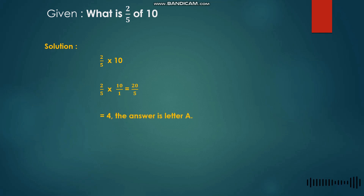Then twenty divided by five gives us four. So therefore the answer is Letter A. That's how easy it is to get the part of a whole when dealing with fractions.